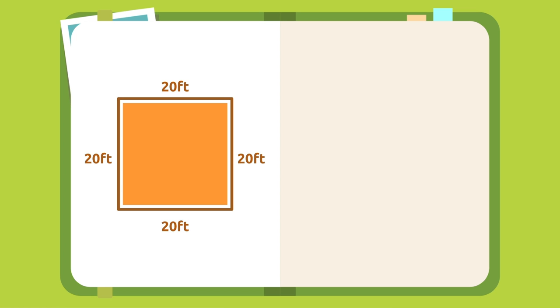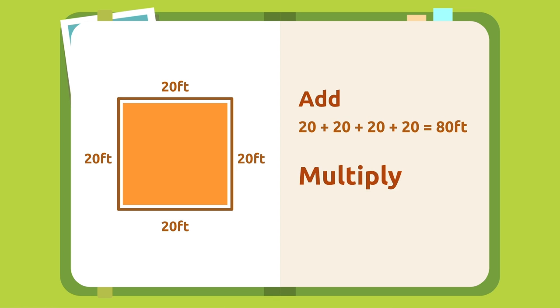This square has four equal sides — each side measures 20 feet. To find its perimeter we can use two strategies: add 20 plus 20 plus 20 plus 20, which equals 80, or multiply four sides by 20 feet. This square has a perimeter of 80 feet.